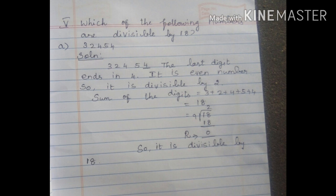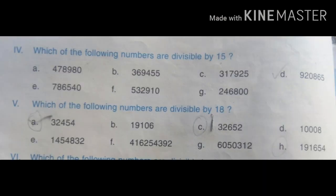Next, Roman numeral 5 exercise: Which of the following numbers are divisible by 18? The number is 32454 — a 5-digit number. Write the solution. The last digit ends in 4, which is an even number, so it is divisible by 2. Sum of the digits: 3 plus 2 plus 4 plus 5 plus 4 equals 18. 18 divided by 9 equals 2, remainder is 0, so it is divisible by 9. Therefore 32454 is divisible by 18. Today your homework is Roman 4 B and C, and Roman 5 B and C.